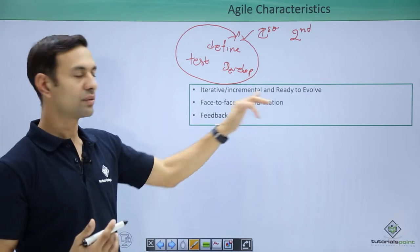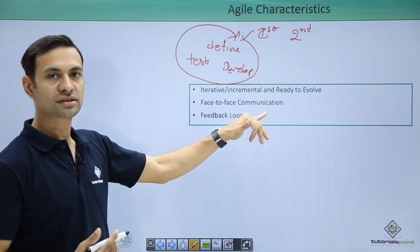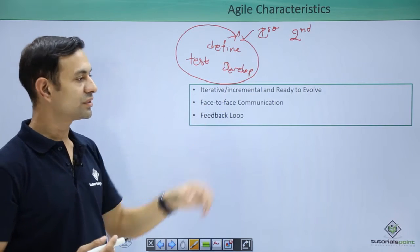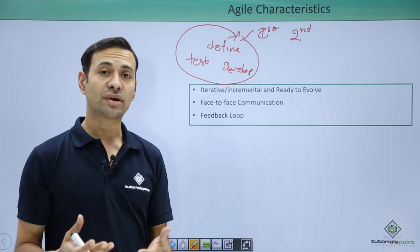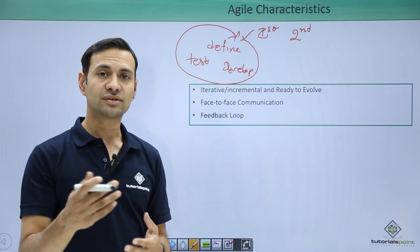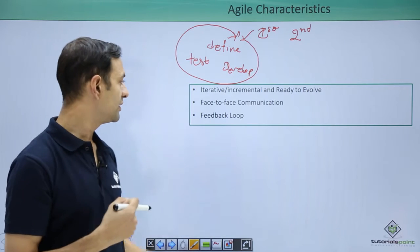Then face-to-face communication. Agile makes sure that every developer faces the client. He understands what the requirement is, he directly faces the client, so he feels the ownership as well.